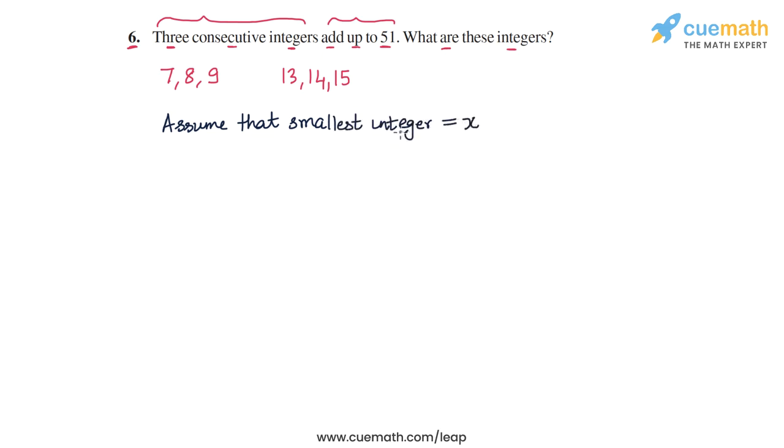Now, what will be the other two integers in terms of x? So for example, if the smallest integer is seven, then the next integer is seven plus one, and the third integer is seven plus two.